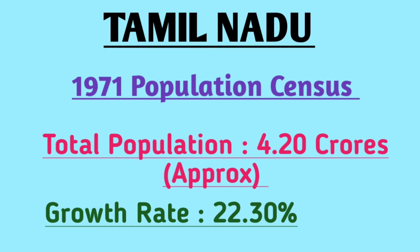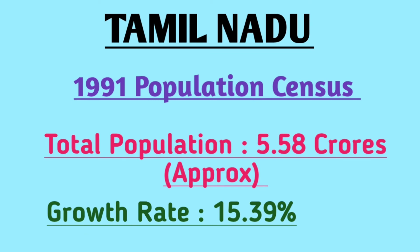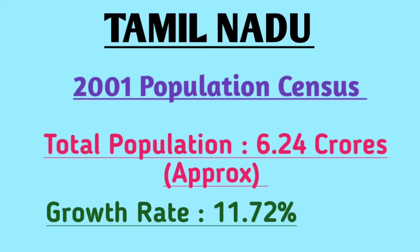In the 1971 census, the total population of Tamil Nadu was 4.20 crores and the population growth rate was 22.30 percent for the last 10 years. In 1981, the total population of Tamil Nadu was 4.84 crores, in which the population growth rate was 17.50 percent. In 1991, the total population of Tamil Nadu was 5.58 crores and the population growth rate was 15.39 percent.